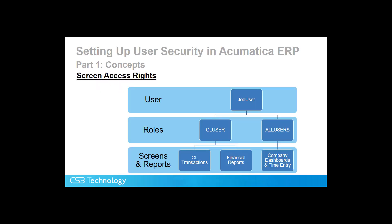On this screen, we see the relation of screen access rights between users' roles and what the role defines. So the user, Joe User, has two roles assigned: one as a GL user, which provides access to GL transactions and financial reports, and the all-users role, which provides access to company dashboards and time entry.